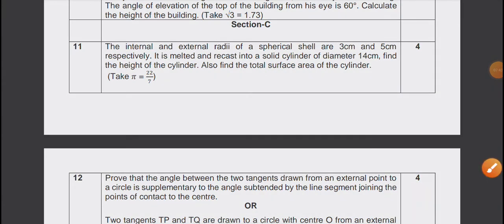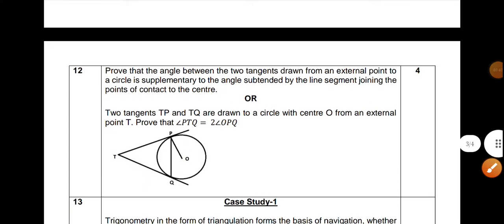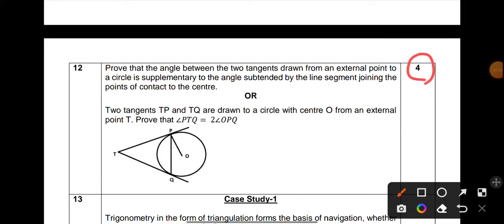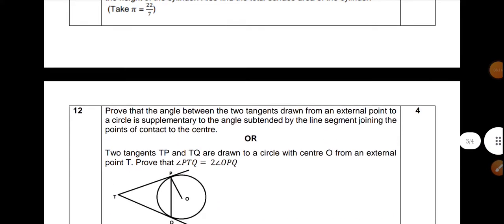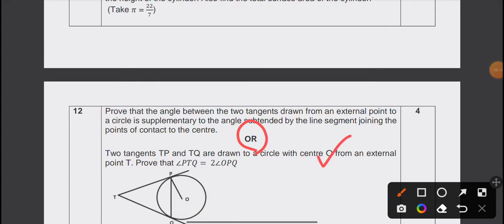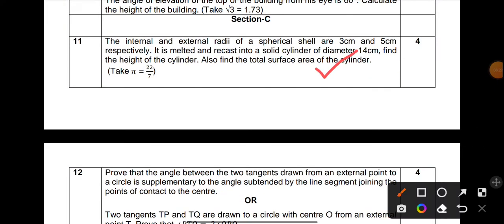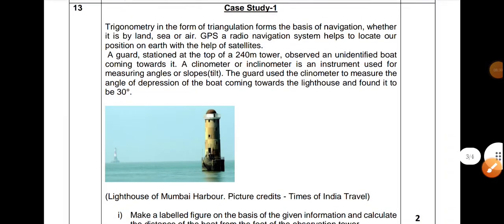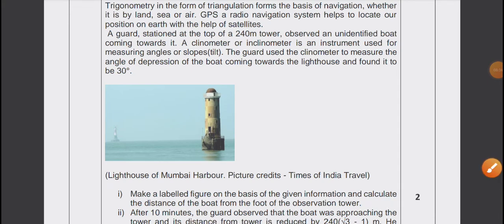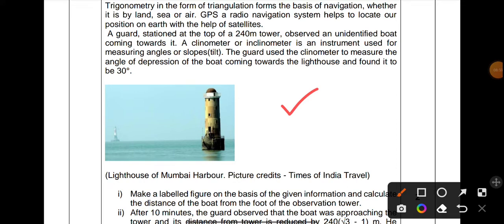Section C starts with a question directly from surface area and volume, which was expected, 4 marks. Then proving circle theorems - prove the angle between the two tangents. And this is from NCERT as expected, which will be coming from your chapter 9 again, that first chapter Application of Trigonometry, which will most probably be a case study.